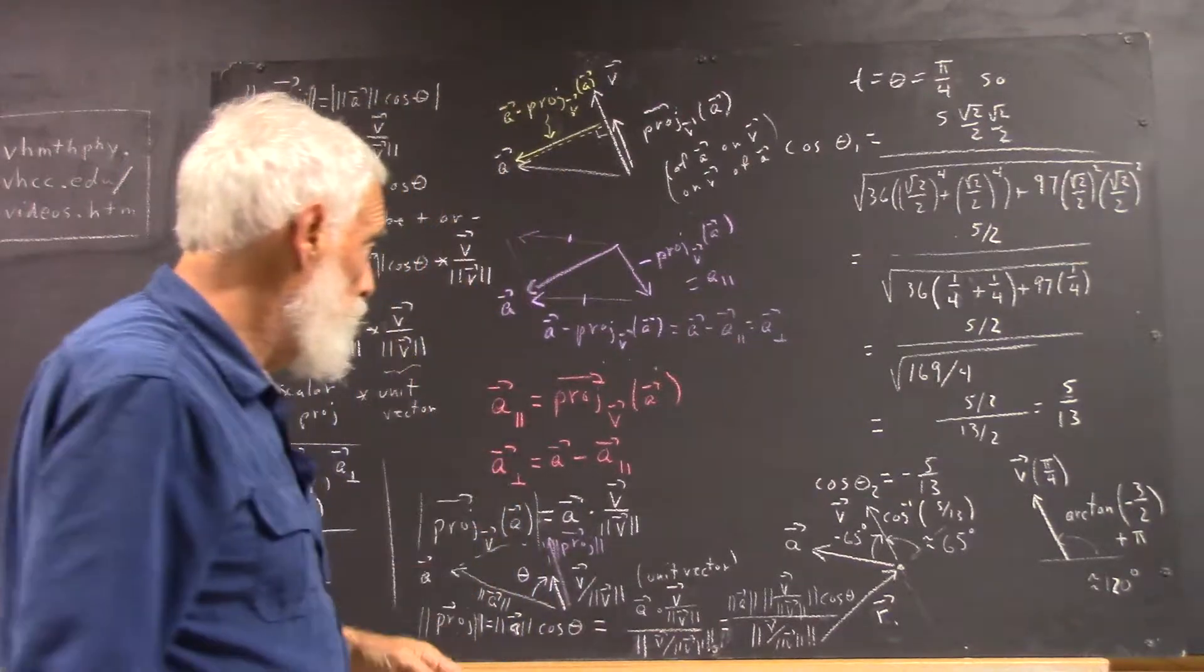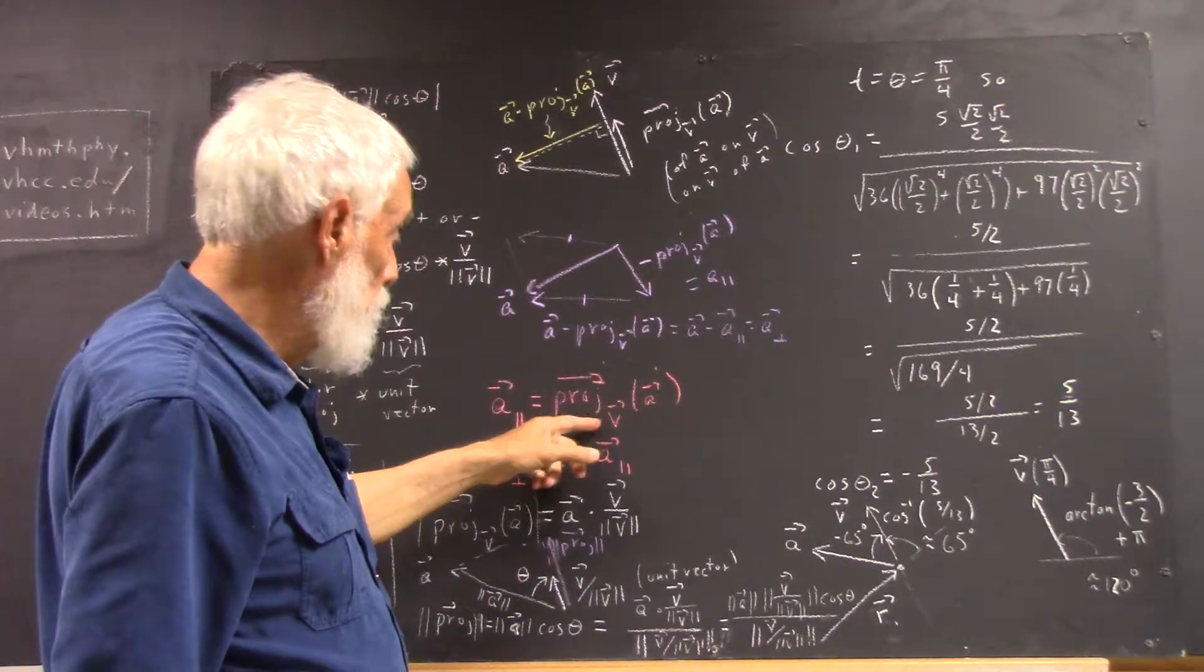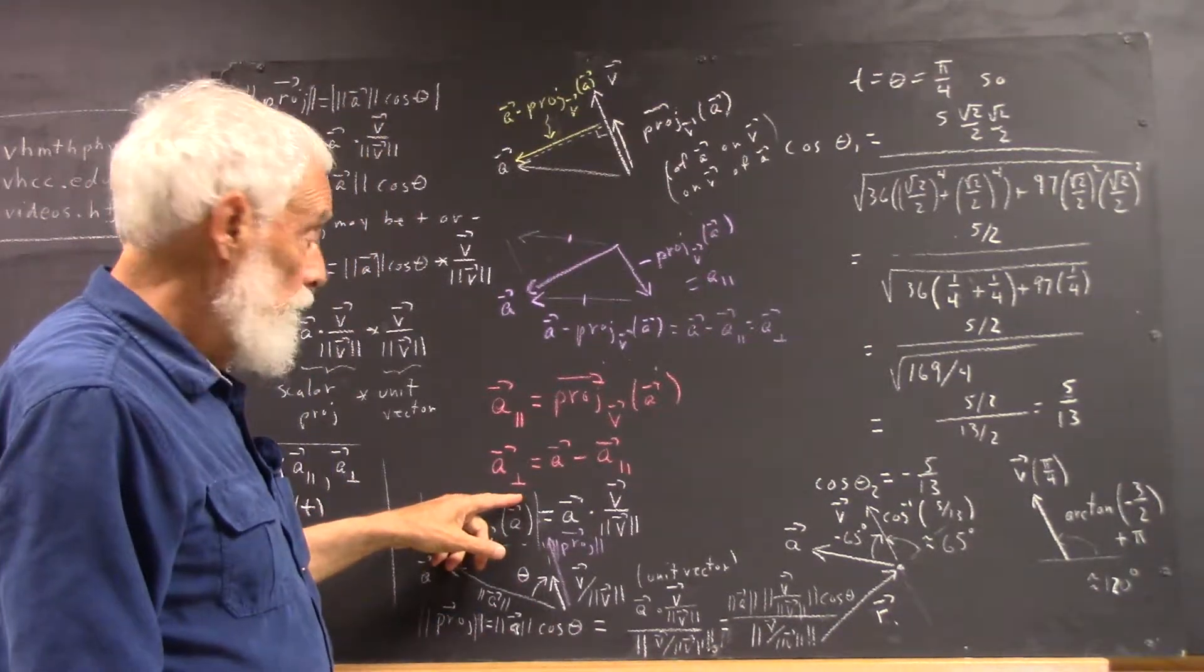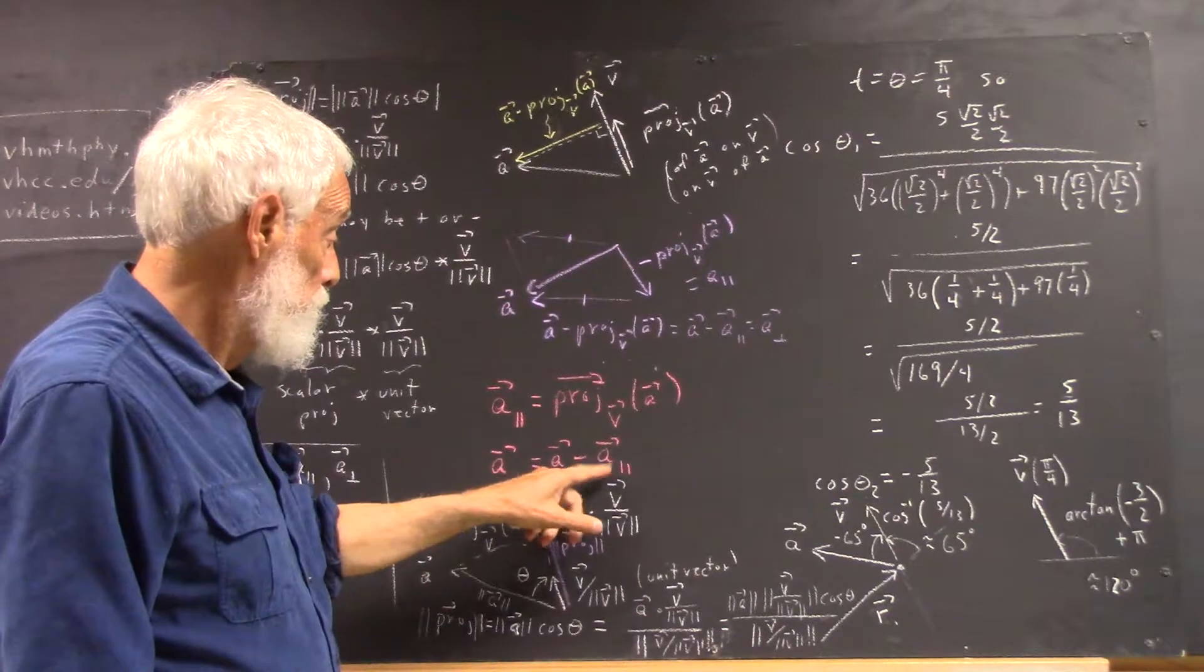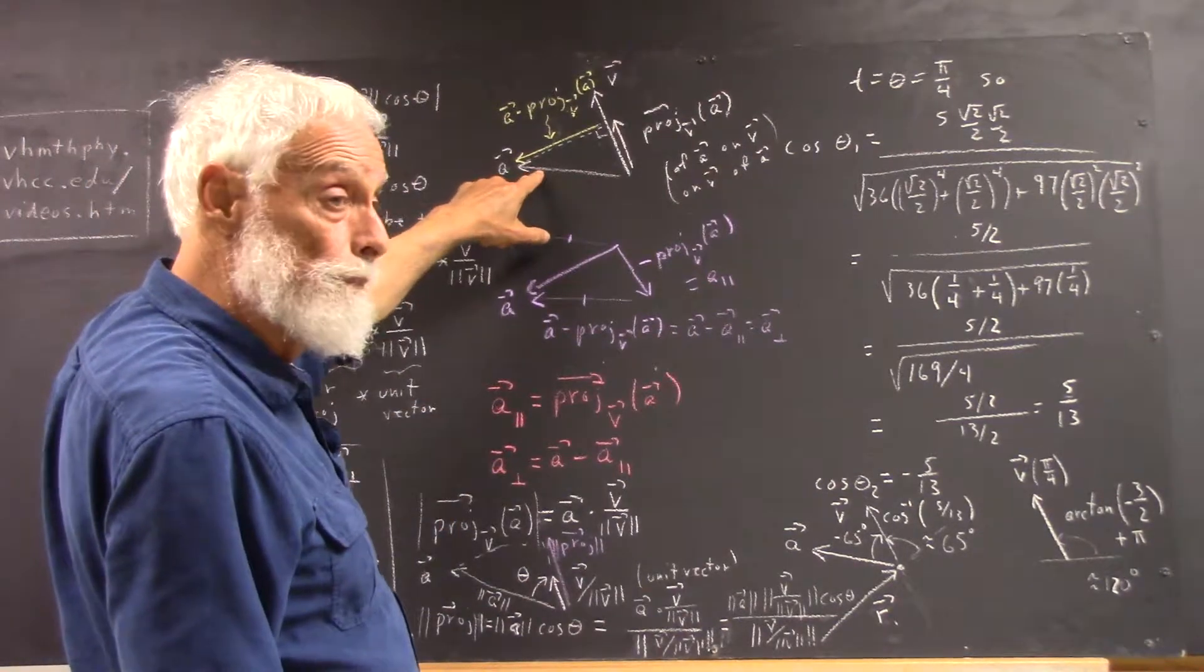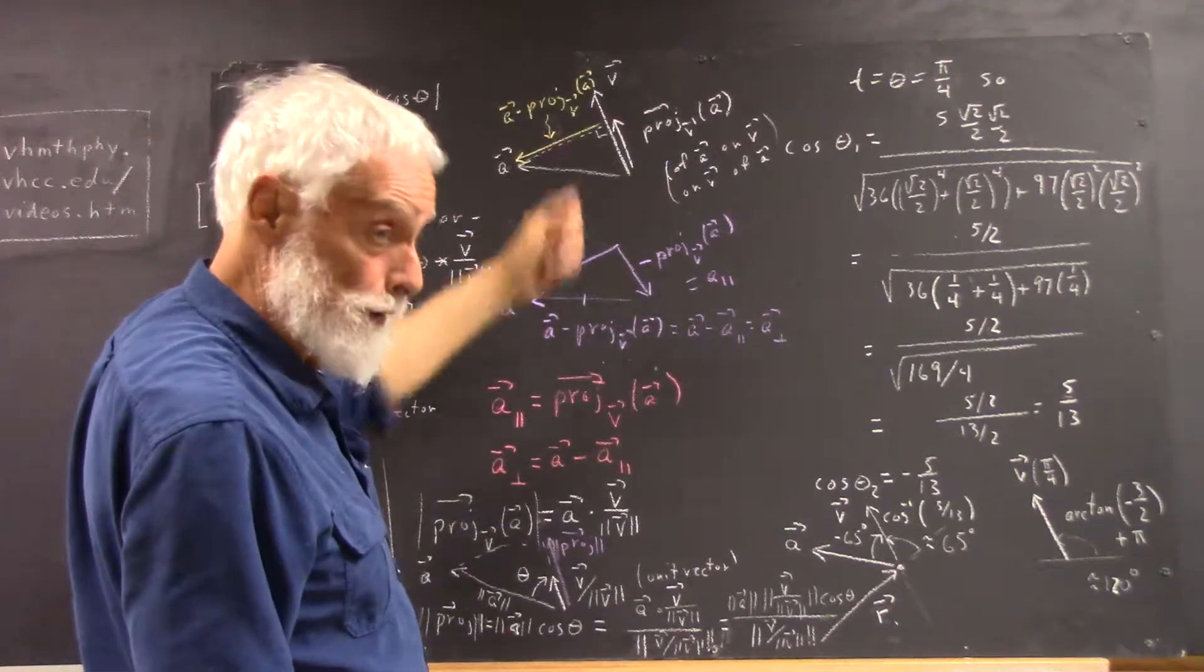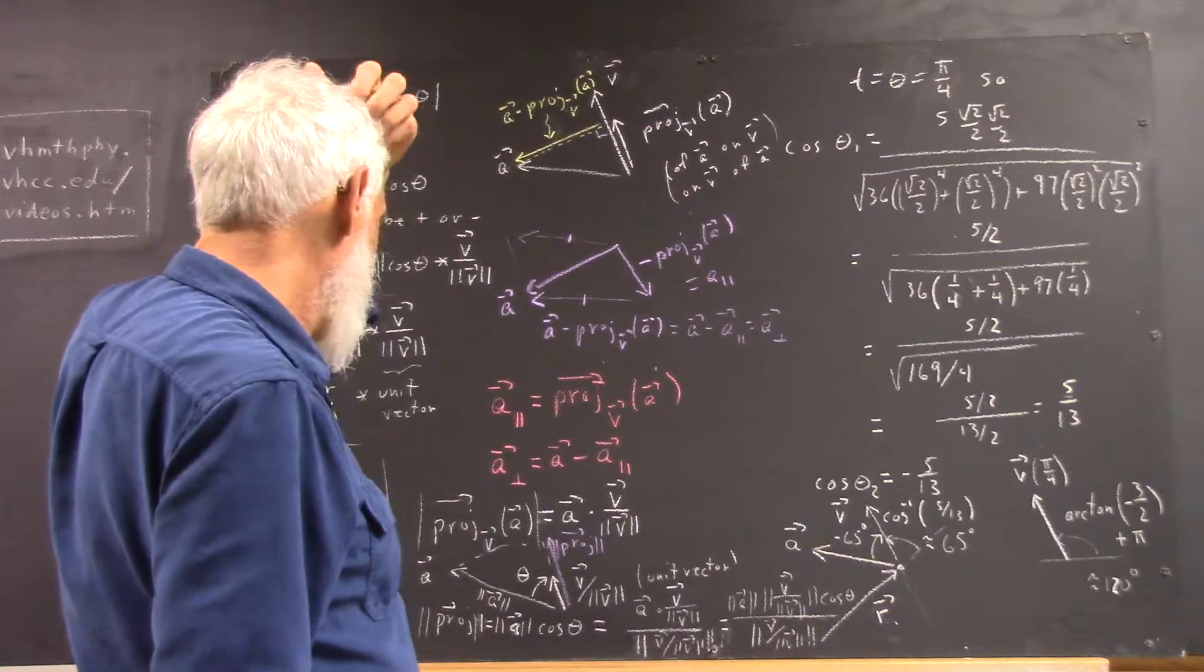This is A minus the projection of V on A. So, we define A parallel to be the projection of A on V. We define A perpendicular to be A minus A parallel. So, this vector and this vector add up to the acceleration vector. And this vector is parallel to V, and this vector is perpendicular to V. And that's all really here in this triangle.